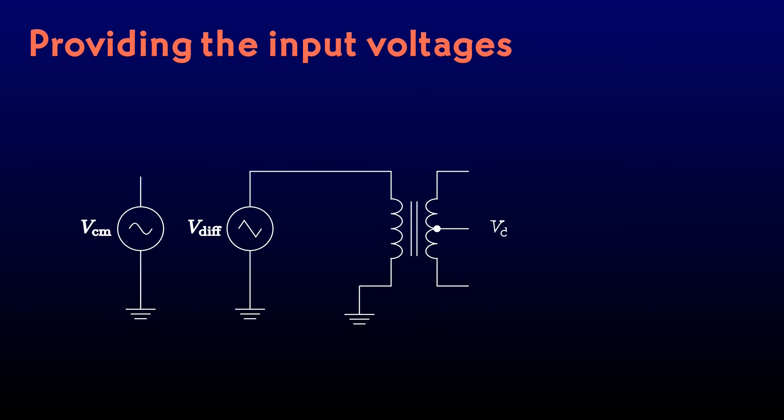If I connect the differential mode signal to the primary, I should see a signal of about a 20th the amplitude at the secondary. Then I can run the common mode signal into the center tap, which will lift both ends of the secondary by the same amount. The common mode signal will be 20 times the amplitude of the differential signal for the same setting on the function generator, but that's all right. We're looking for our circuit to be able to handle weak differential mode signals.